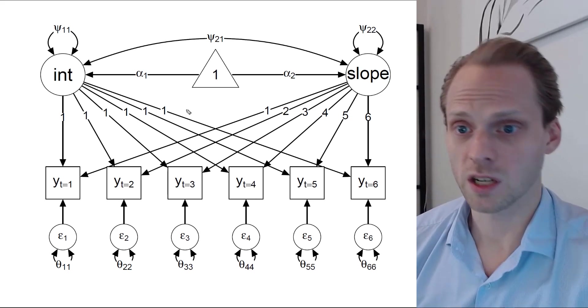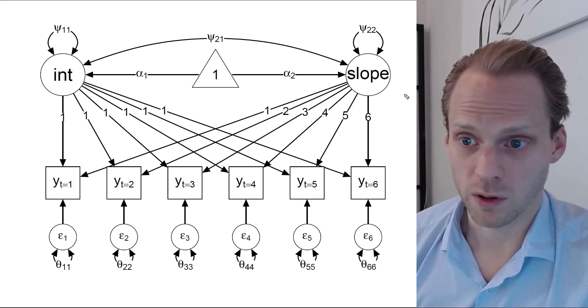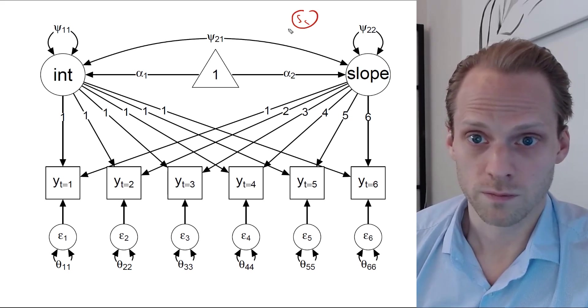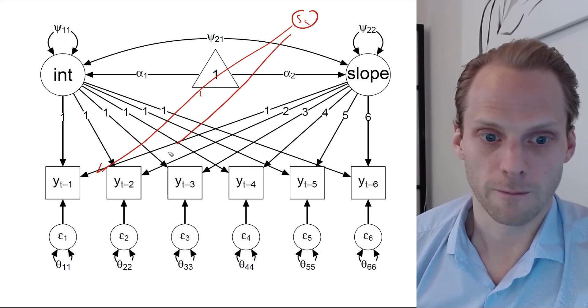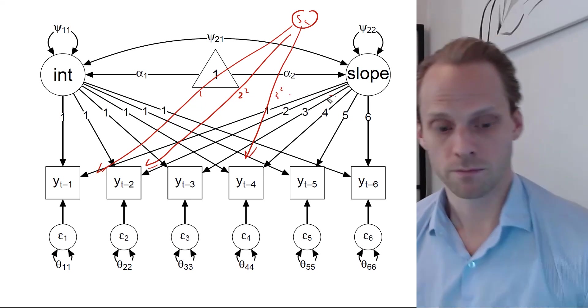Now there are also some other extensions that we can do with this. So for example, if we want to add a quadratic effect, we could add a second slope variable, let's say s2, with also factor loadings, one, but then these being like two squared, so four, three squared, etc. That's an option.